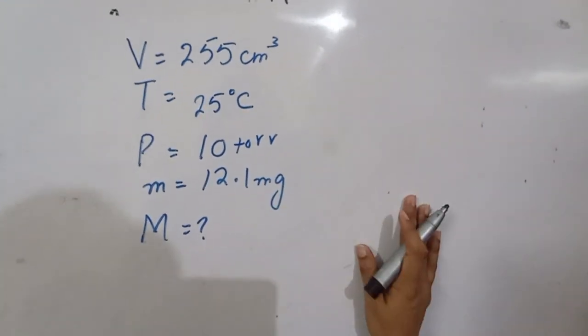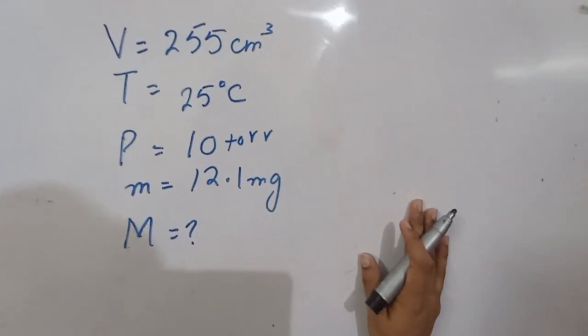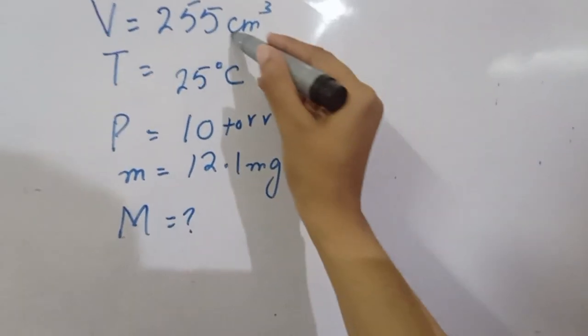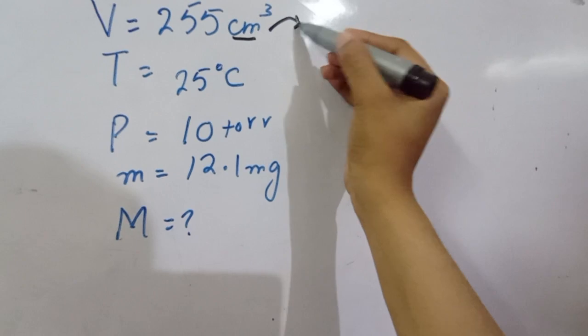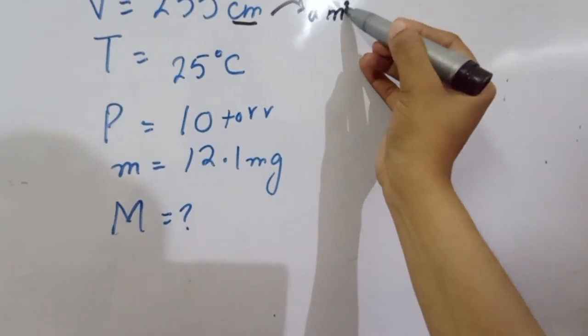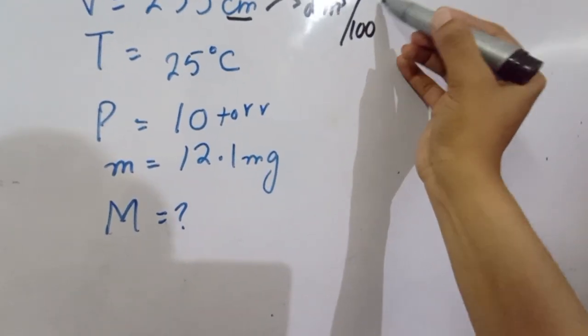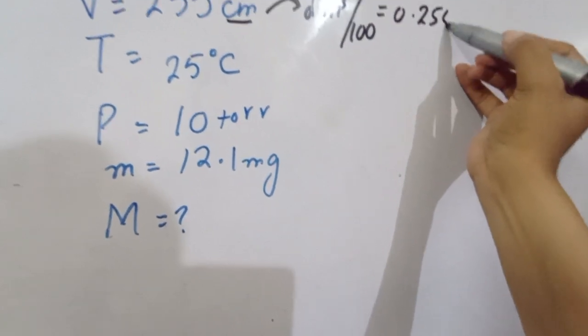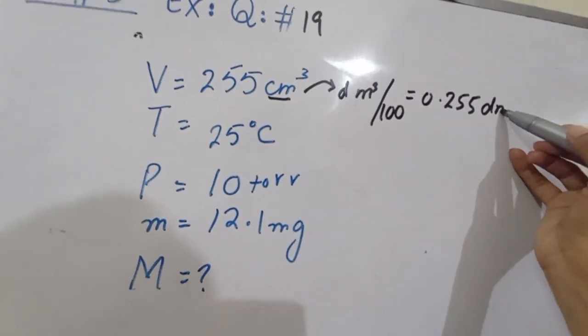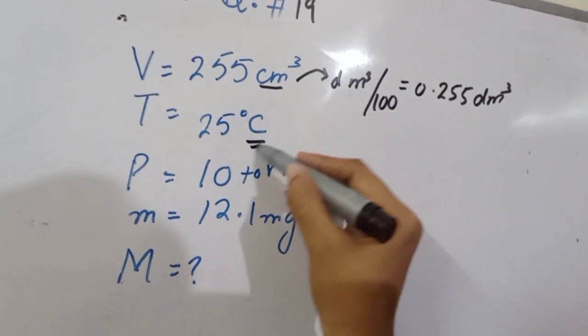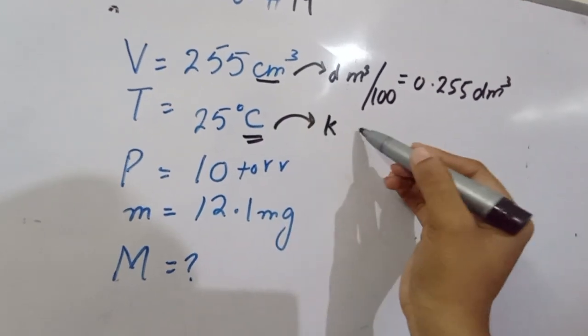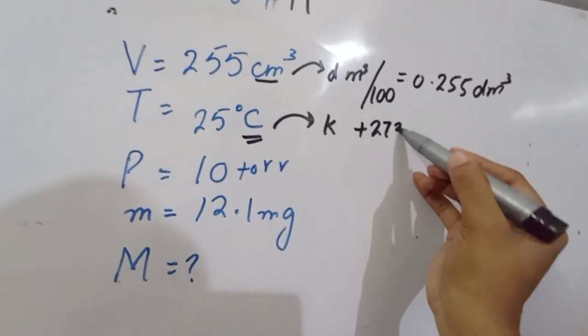mass is 12.1 mg, molar mass we need to find. First, convert centimeter cube to decimeter cube by dividing by 1000, giving 0.255 decimeter cube. Temperature in Kelvin: 25 plus 273 equals 298 Kelvin.